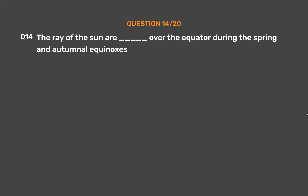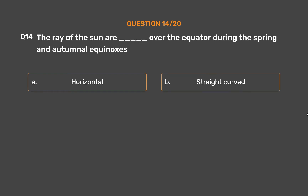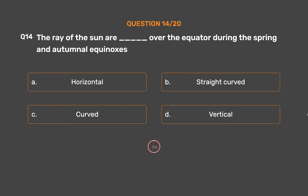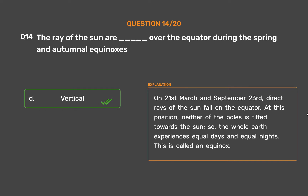Question number 14. The rays of the Sun are underscore over the equator during the spring and autumnal equinoxes. Option A: Horizontal. Option B: Straight curved. Option C: Curved. Option D: Vertical. The correct answer is Option D: Vertical. On 21st March and September 23rd, direct rays of the Sun fall on the equator. Neither of the poles is tilted towards the Sun, so the whole Earth experiences equal days and equal nights. This is called an equinox.